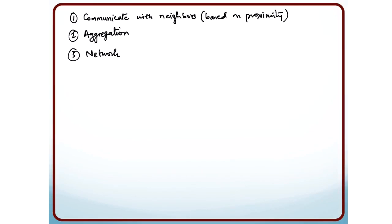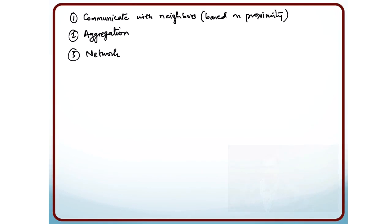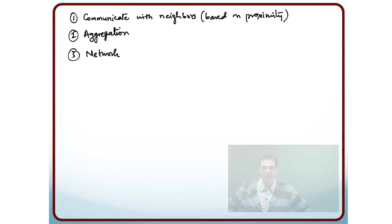Was it the most efficient way of forming the network? Probably not. At the end of the day, all the data had to be accumulated at one point — there was one kind of leader or root where the data had to be accumulated.